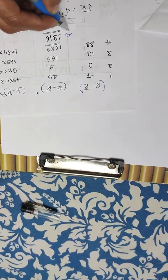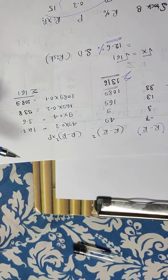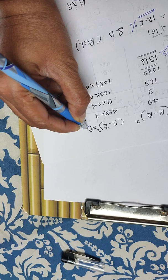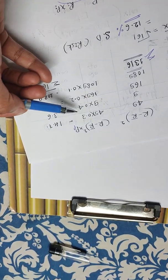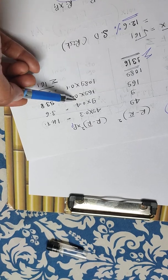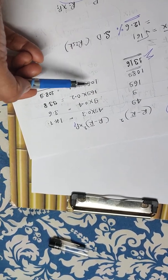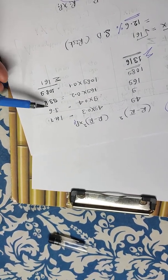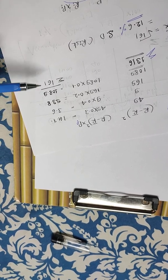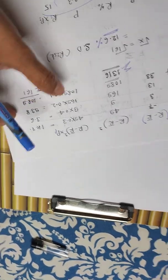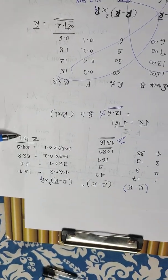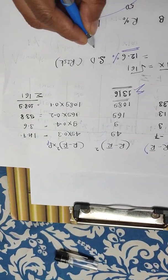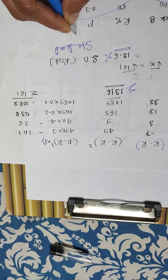Squaring (R − R̄): 49, 9, 169, 1089. Multiplying by probability Pᵢ: 49×0.3 = 14.7, 9×0.4 = 3.6, 169×0.2 = 33.8, 1089×0.1 = 108.9. The summation is 161. The standard deviation is the square root of 161.